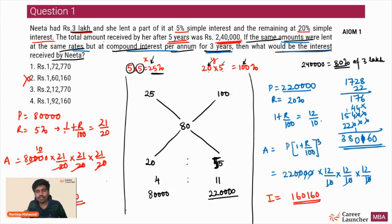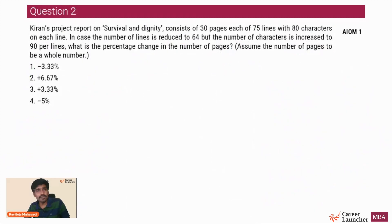What is the combined total interest that Neeta will get in both schemes taken together? It will be 1,60,160 plus 12,610. The answer is option 1: 1,72,770 is the interest she's going to earn. This is a question from our All India Mock 1 this year, All India Open Mock 1.